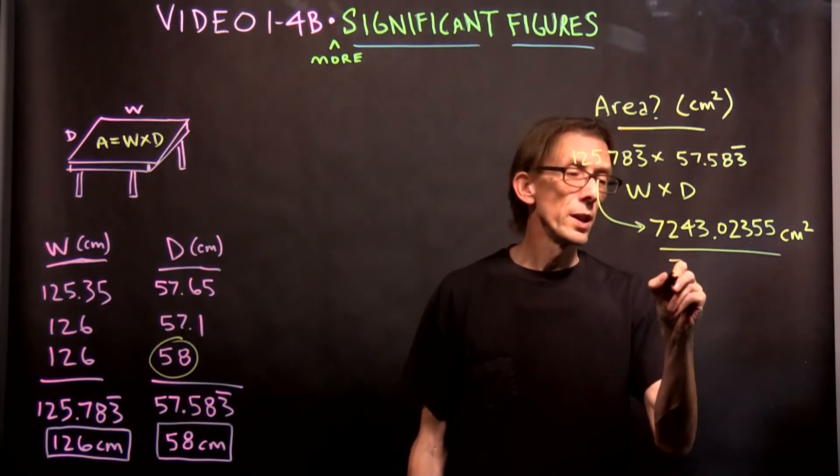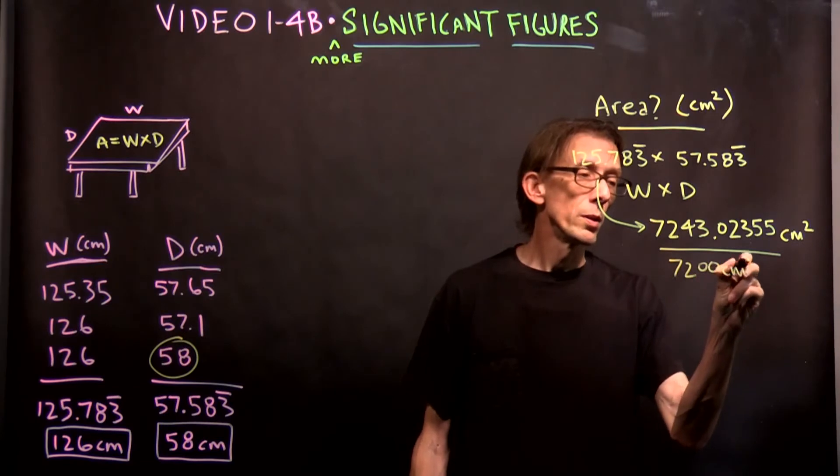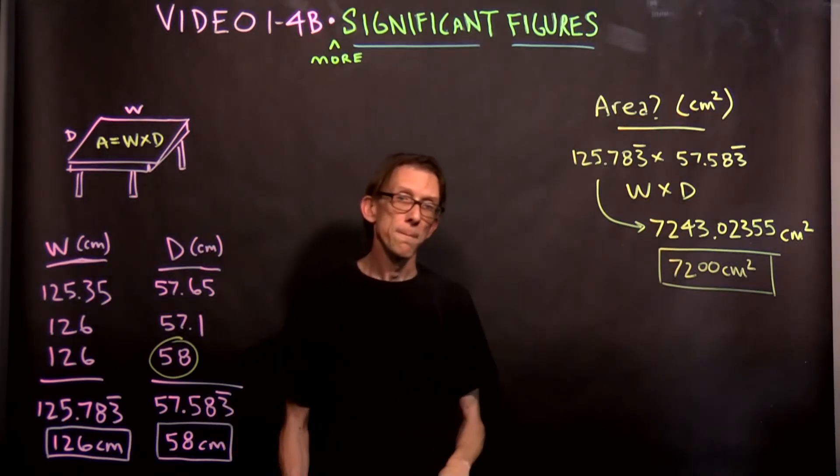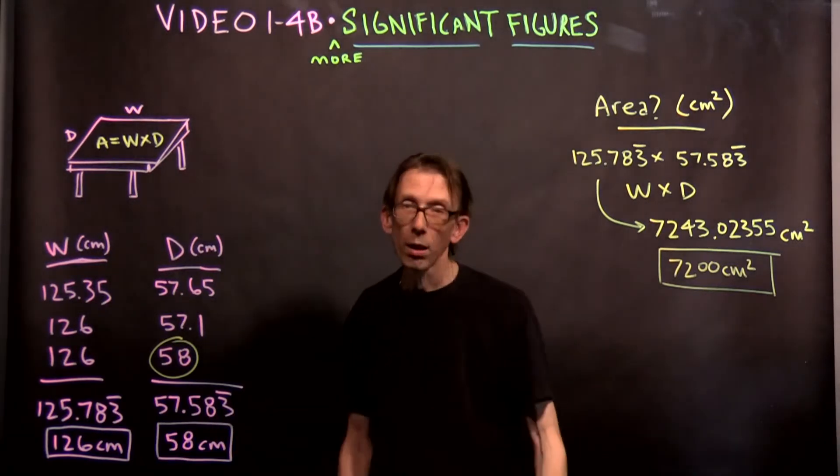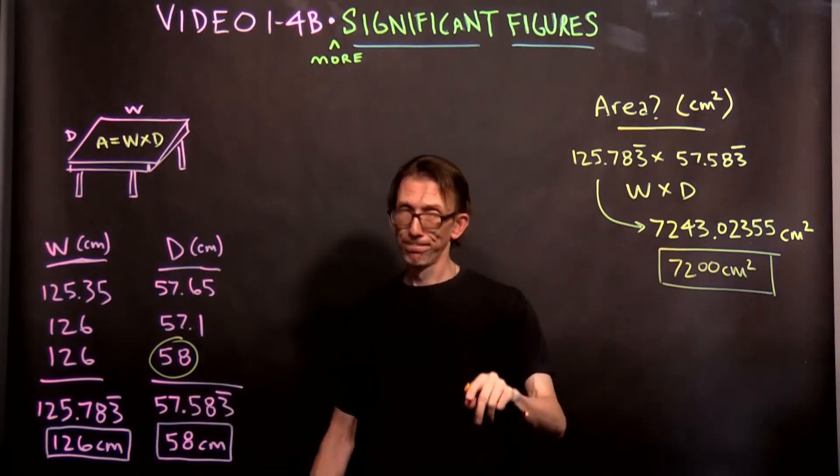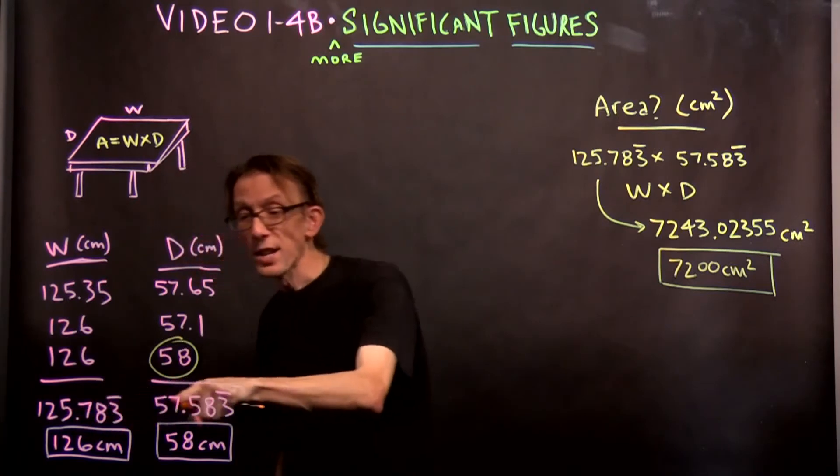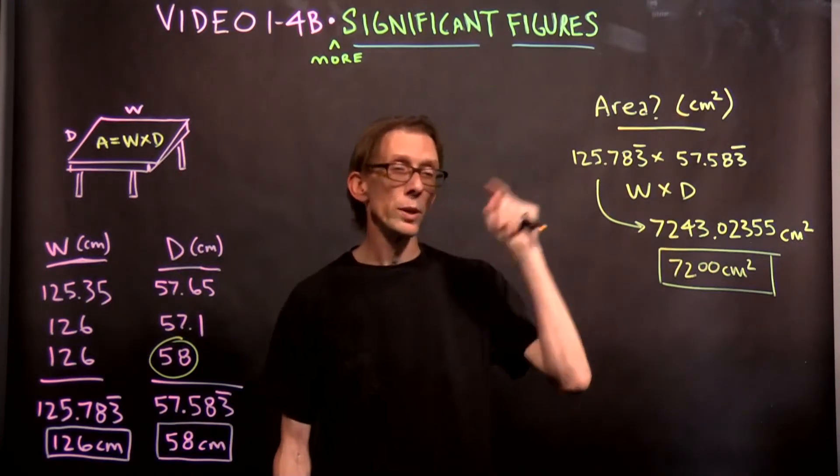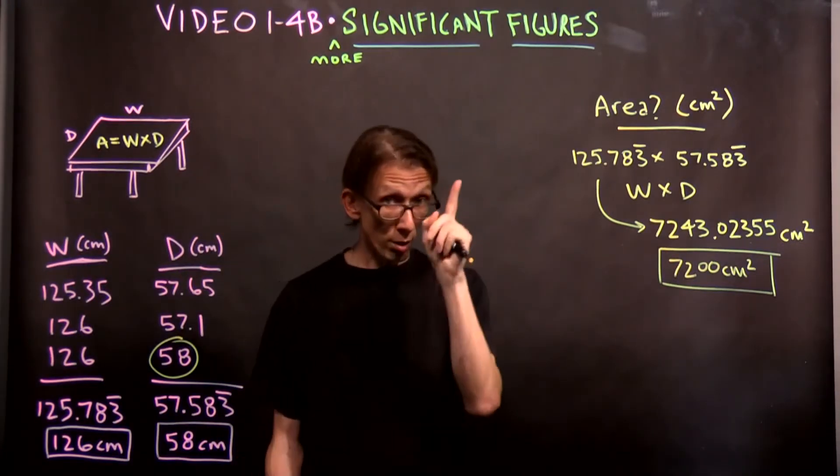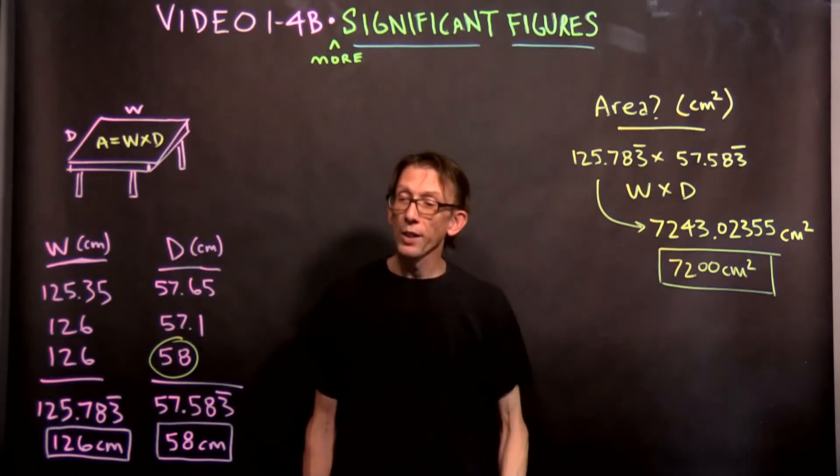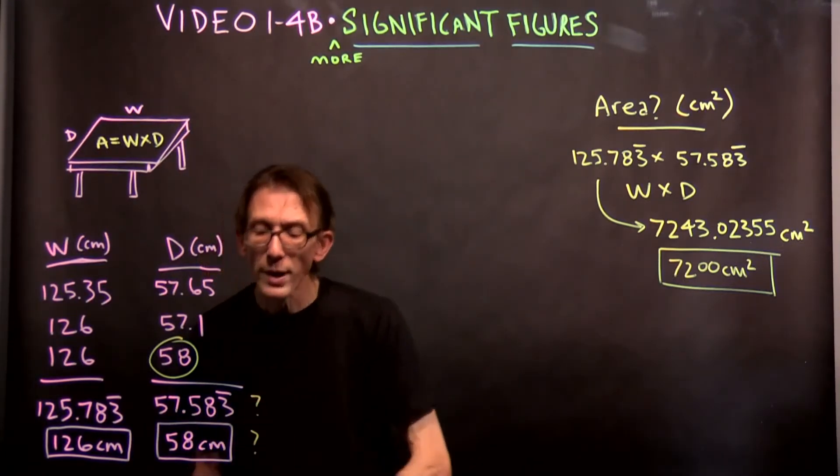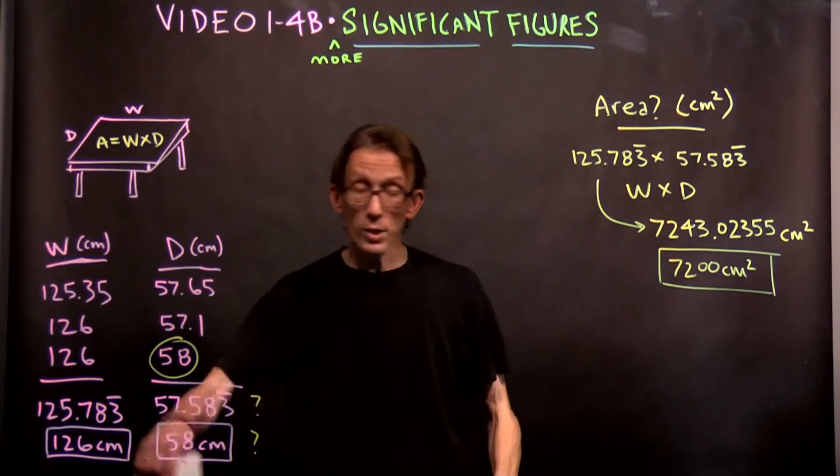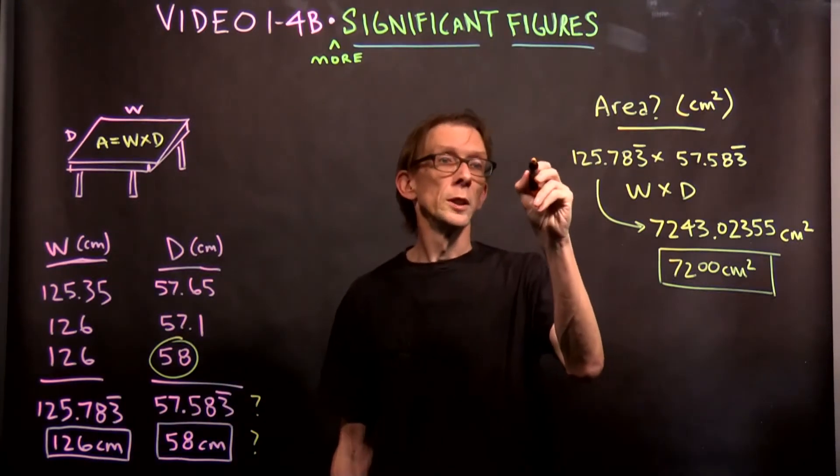When you do that, you get 7,200 centimeters squared. That, we're not done. So hold on. That is what we get when we multiply these two numbers. 125.783 times 57.583. That's the number we get. But my original question, you'll remember because you're all very alert, is which one of these sets of numbers do we use to find the area? Do we use this one or do we use 126, so this one, so option A,